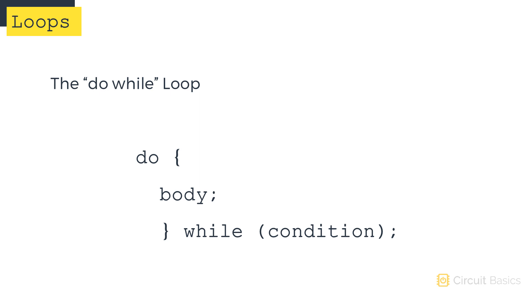So even if the condition here is false, the code in the body will get run one time. The Arduino executes code line by line from top to bottom. So it will first enter this do block and execute the code inside it. Then it will reach the while statement and evaluate the condition.